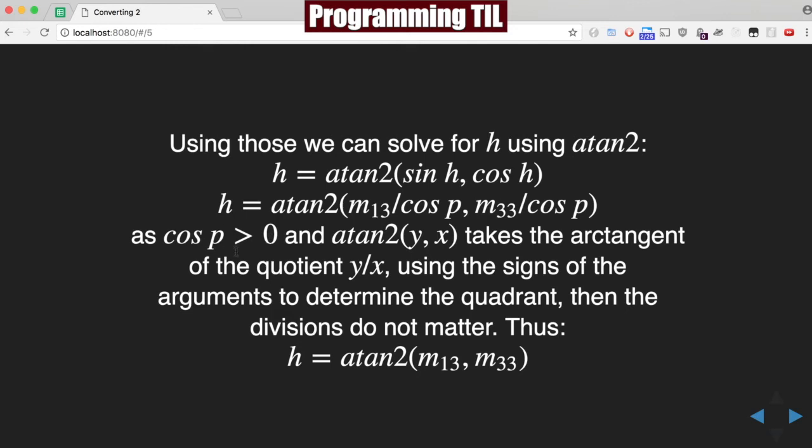And as we know that cosine P is greater than zero, and arctangent 2 of Y, X takes the arctangent quotient Y over X and the signs of the arguments, then the division by cosine P doesn't matter since it's greater than zero.